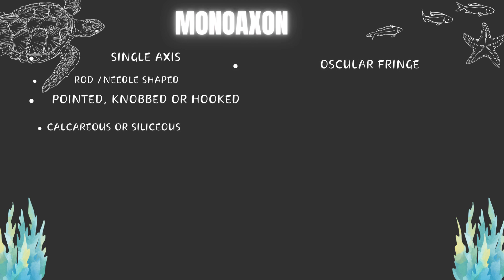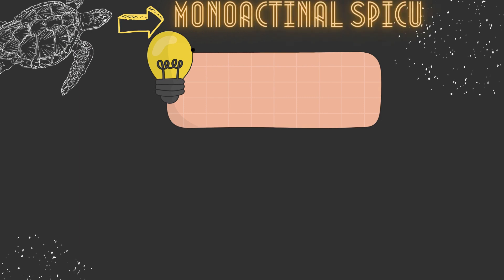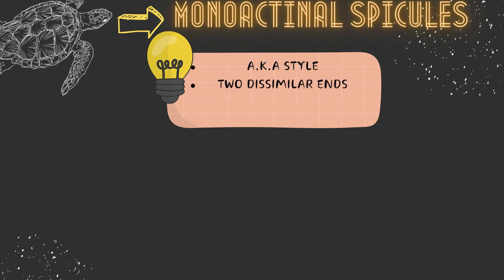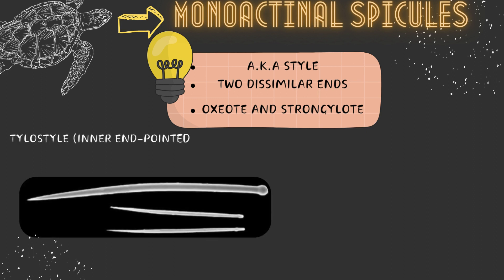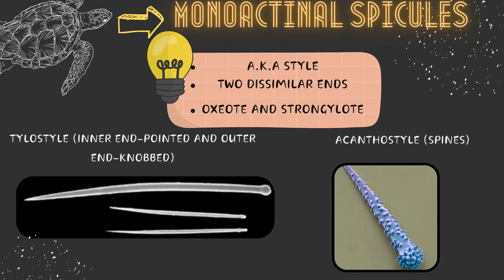Monoaxon spicules are developed due to growth in one or both directions. The first subtype is monactinal spicules, also called styles, which are developed due to unidirectional growth, so have two dissimilar ends — generally an inner pointed end and an outer rounded end. The pointed end of styles projects to the exterior. These may be modified to form tylostyle, which has an inner pointed end and outer knobbed end, or acanthostyle, which is a style covered with spines.